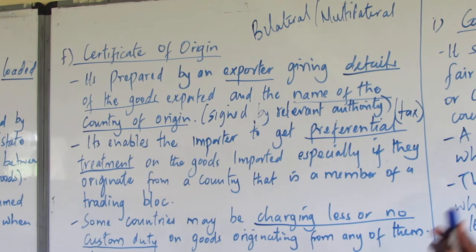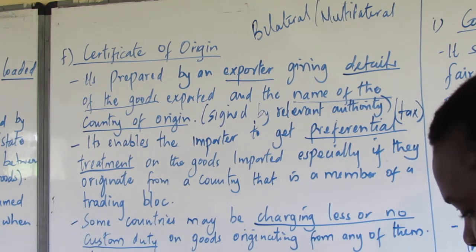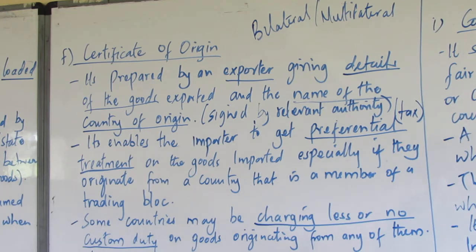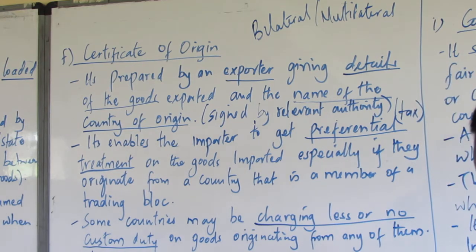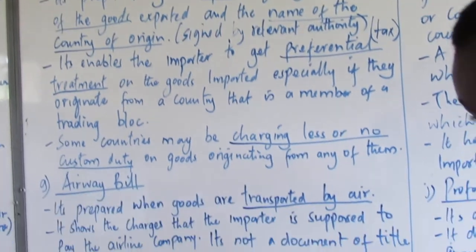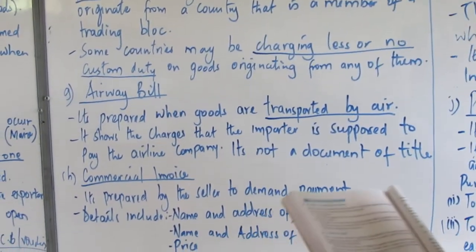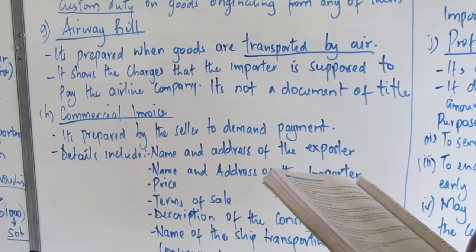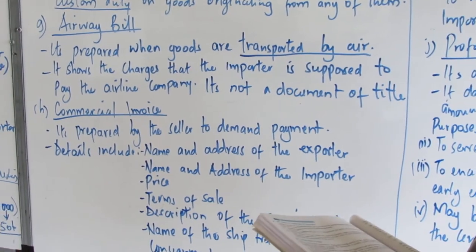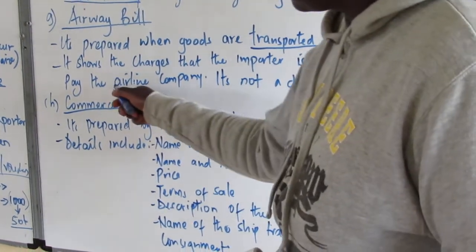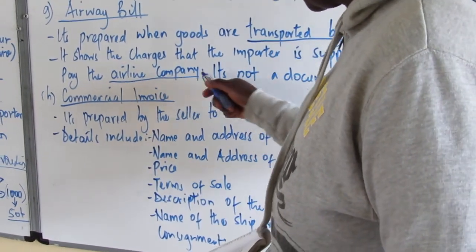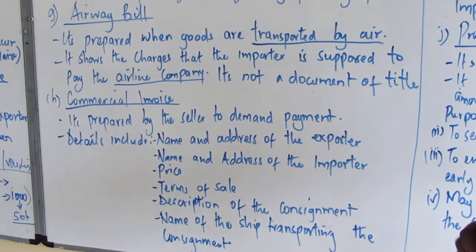The certificate of origin is important in such countries. Then we have the airway bill. As the term suggests, the airway bill applies only to goods transported by air — using aeroplanes and such like. It shows the charges that the importer is supposed to pay the airline company, which is the total cost of transporting those goods.